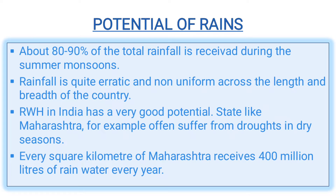Now, the potential of rainfall in India: rainfall is irregular and non-uniform across the length and breadth of the country — somewhere it is more and somewhere it is less. 80 to 90% of the total rainfall is received during the summer monsoon while the rest of the period goes dry. India has very good potential of rains. For example, Maharashtra often suffers from drought in the dry season, yet receives 400 million liters of rainwater per square meter every year, whereas the demand of water is about 180 to 185 million liters — less than even half of the annual rainfall. From this calculation we can see that availability of water is not the problem; the problem is the lack of enterprise to collect, store, and utilize water.